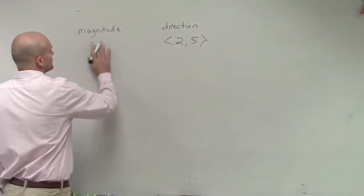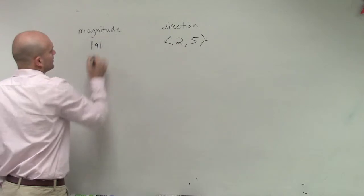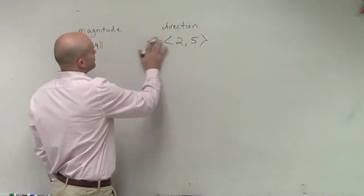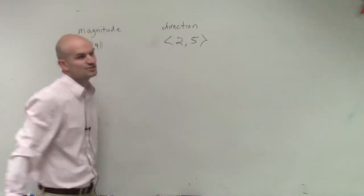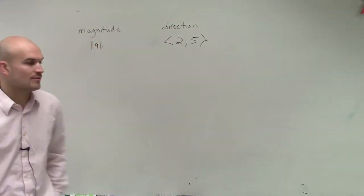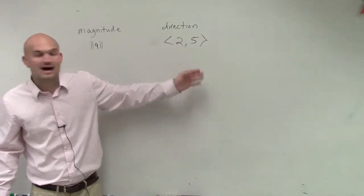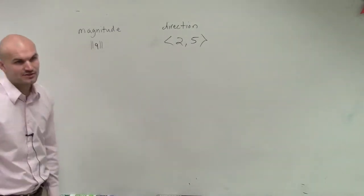So we have a new vector, and we have another vector u that has a direction of 2 comma 5. And we want to find our new vector that's going to have the same direction as 2 comma 5, but with the magnitude now of 9.